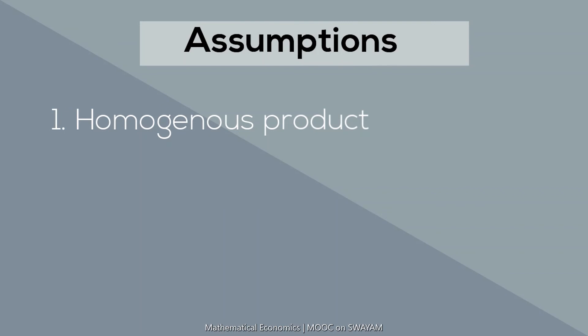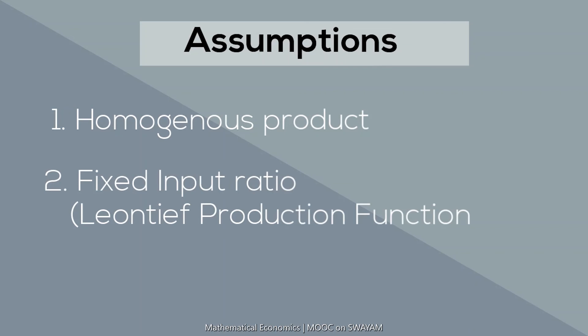Number 2, each industry follows a fixed input ratio, and there is no substitutability between factors. The production function is therefore known as Leontief production function or fixed proportions production function.